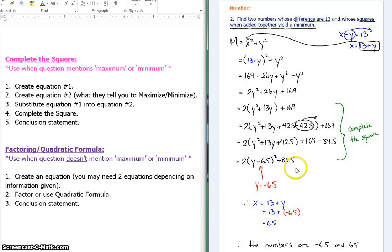That yields a minimum of 84.5, which is not what they asked. They wanted you to find the numbers. Well, y is negative 6.5, and that gives you this minimum. And then you find your x by subbing that red number right back in here, so 13 plus negative 6.5, which gives you your x. So your two numbers are negative 6.5 and 5, and that's your conclusion statement. So we did the substituting, we did the completing the square, and we did the conclusion statement.